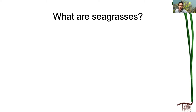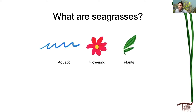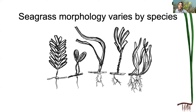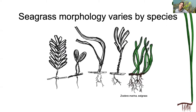This week's plant of the week is eelgrass, which is a type of seagrass. Seagrasses are aquatic flowering plants, also known as angiosperms. They vary a lot in their morphology, as you can see from this cartoon I drew here. The species of seagrass we're interested in today is eelgrass, or Zostera marina.